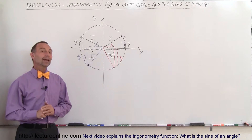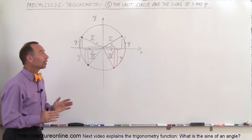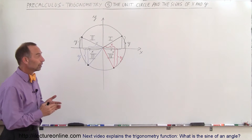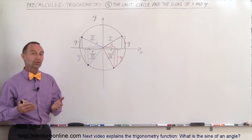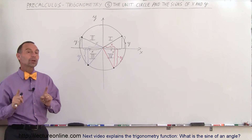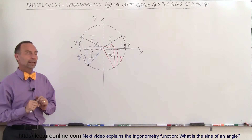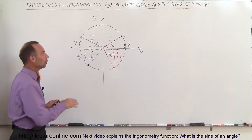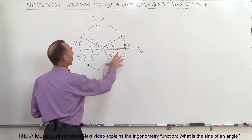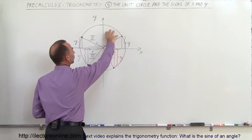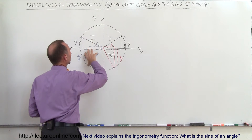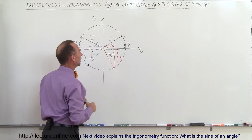Welcome to our lecture online. Now we're going to take a look at the angles on the unit circle in relation to the values for x and y, depending upon what quadrant we're in. Just like in the x-y axis, we have four quadrants: quadrant 1, quadrant 2, quadrant 3, and quadrant 4.